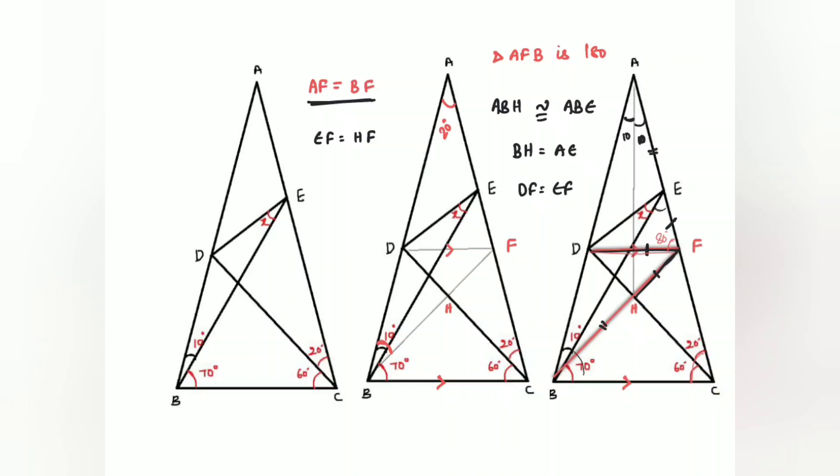And this angle is 70, 80, remaining angle is 30. Therefore, X plus 30 is equals to half of 100. Half of 100 is 50, therefore angle X is equal to 20 degrees.